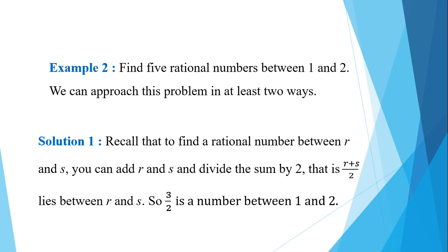Using Method 1, 3 by 2 is a rational number between 1 and 2. We apply the formula using 2 by 2 and 3 by 2 to find numbers between 1 and 2.